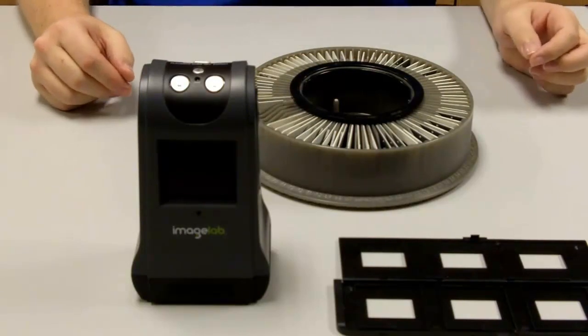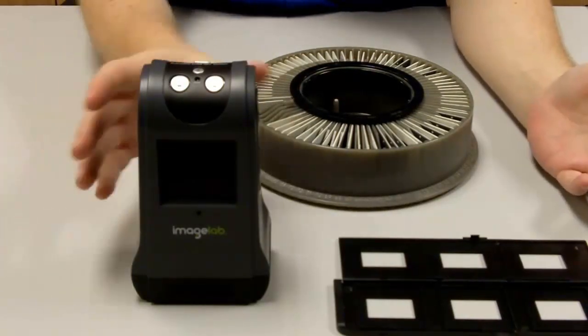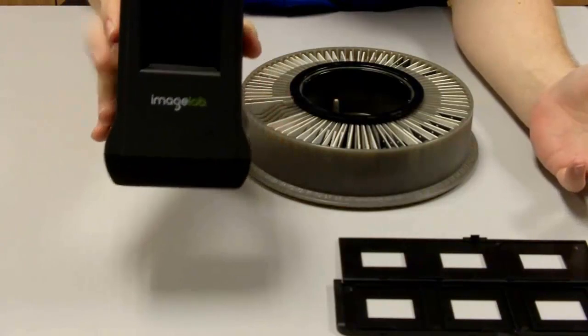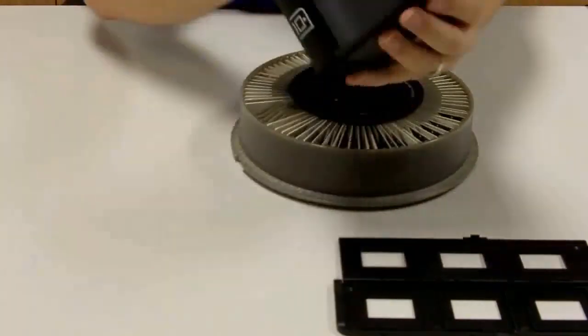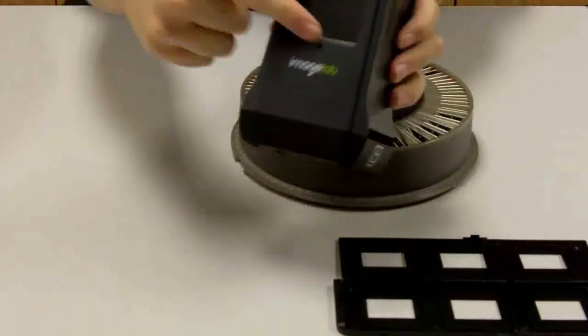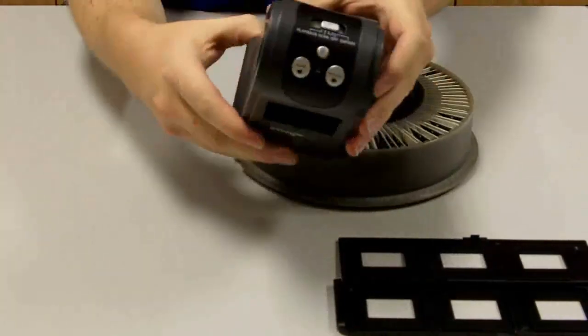Alright, so here we have a pretty typical setup when you check out the device. You're going to end up with the actual ImageLab scanning unit, which is a simple enough device. There's an SD memory card, a little display screen, and then on the top of the device are all of your controls.